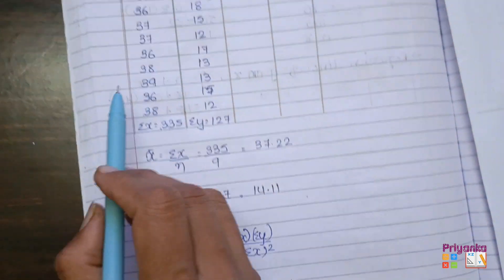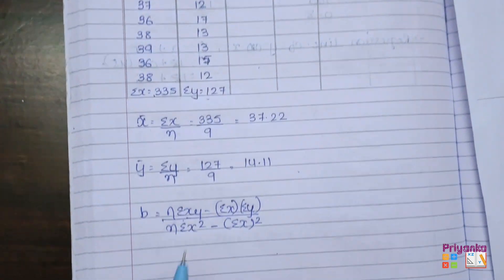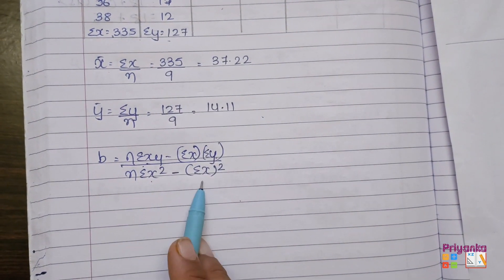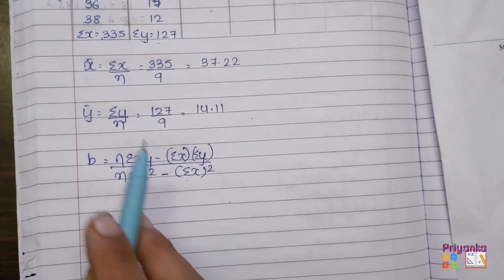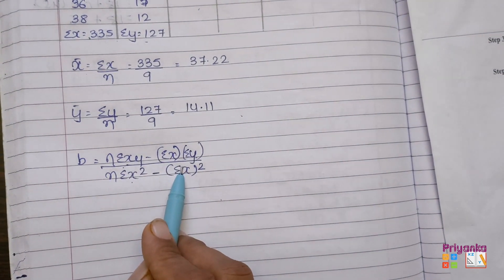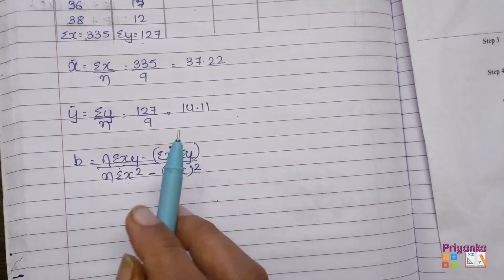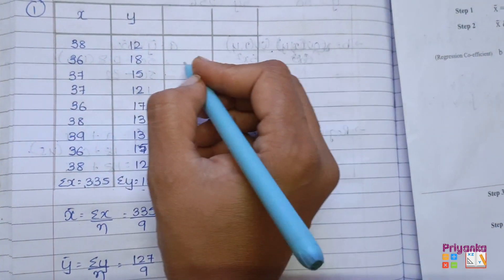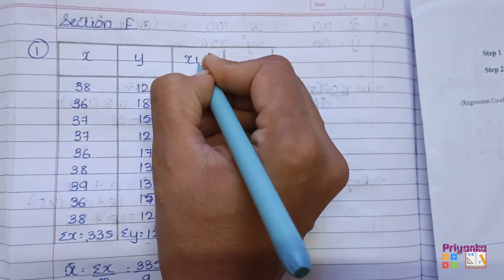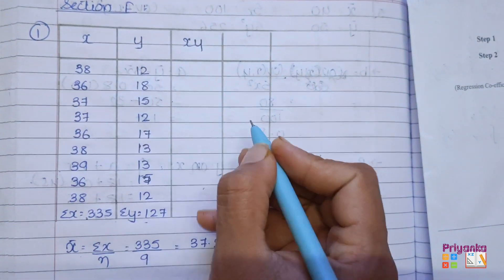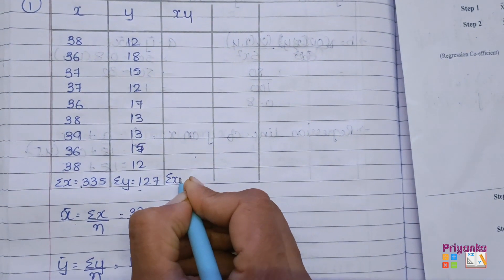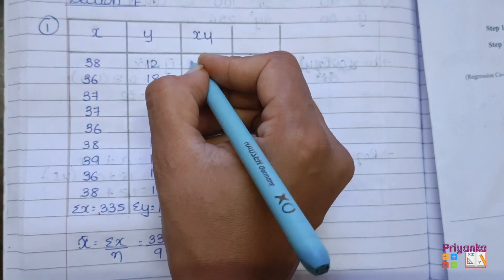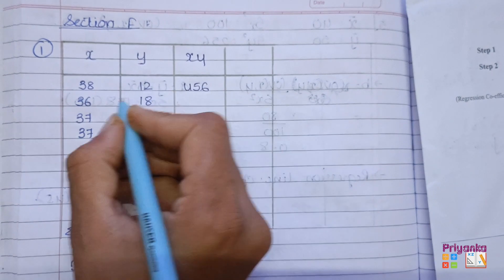Sigma x and sigma y I already have. The next I need is sigma(x²) and sigma(xy). So the next column will be x multiplied by y to get the xy column. The total of this column gives sigma(xy). Starting the multiplication: 38×12 gives 456.